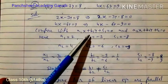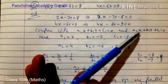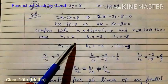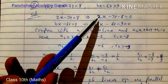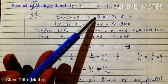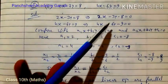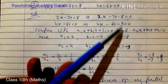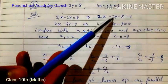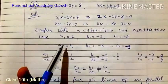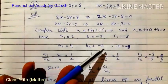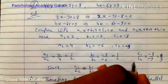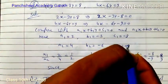Comparing with a1·x + b1·y + c1 = 0 and a2·x + b2·y + c2 = 0: a1 = 2 (coefficient of x in equation 1), b1 = -3 (coefficient of y), c1 = -8. For equation 2: a2 = 4, b2 = -6, c2 = -9.